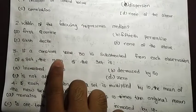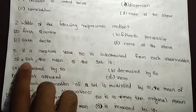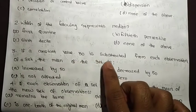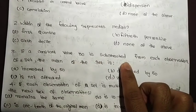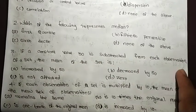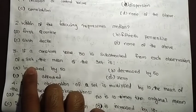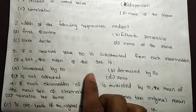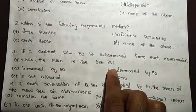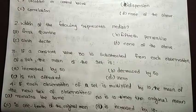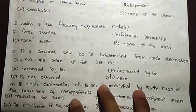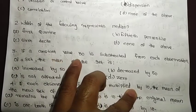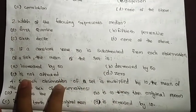Question 3: If a constant value of 50 is subtracted from each observation of a set, what happens to the mean of the set?